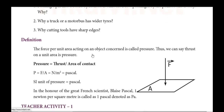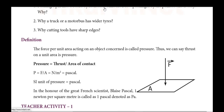Here is a motivational question. If there is a truck or a motor bus with a tire, the area of contact with the ground is large. For a bus or lorry, the tires are wide so that the pressure on the ground is distributed and the vehicle can move easily without sinking into the surface.